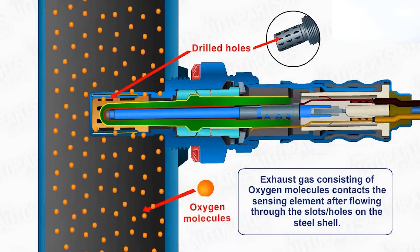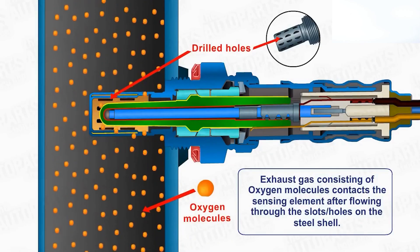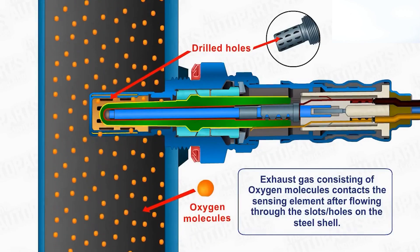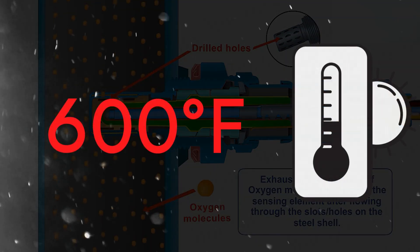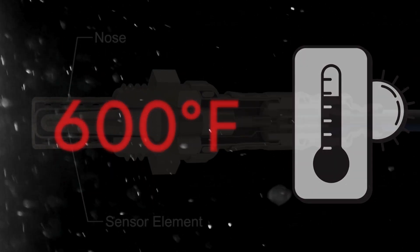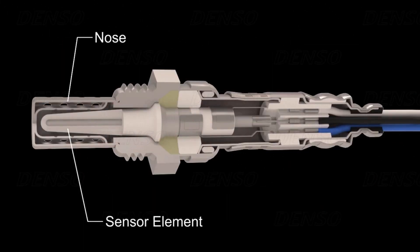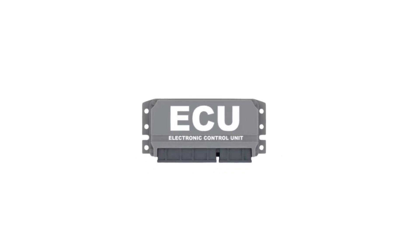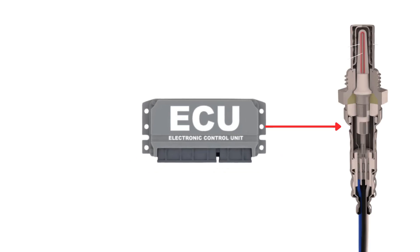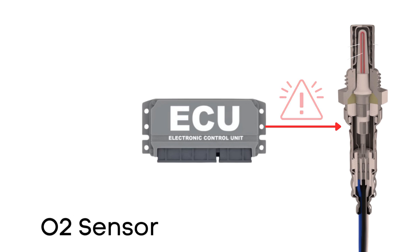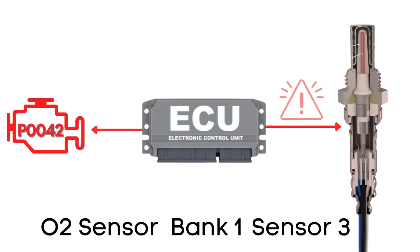But here's the thing: an oxygen sensor won't function correctly until it's heated to a certain temperature — around 600 degrees Fahrenheit for conventional sensors. That's where the heater circuit comes in. It's designed to warm up the sensor quickly so it starts working sooner. The ECU regularly checks this heater circuit to make sure it's functioning properly. If the ECU detects a problem with the heater circuit in the oxygen sensor on Bank 1 sensor 3, it triggers the P0042 code.